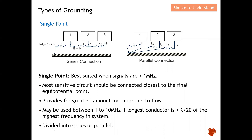For single point grounding, it can be divided into series or parallel configurations. In the series connection, all devices are connected in series and finally to the final equal potential point. In the parallel connection, sub-devices 1, 2, and 3 each have one wire routed directly to the single final equal potential point. This is the definition for single point grounding.